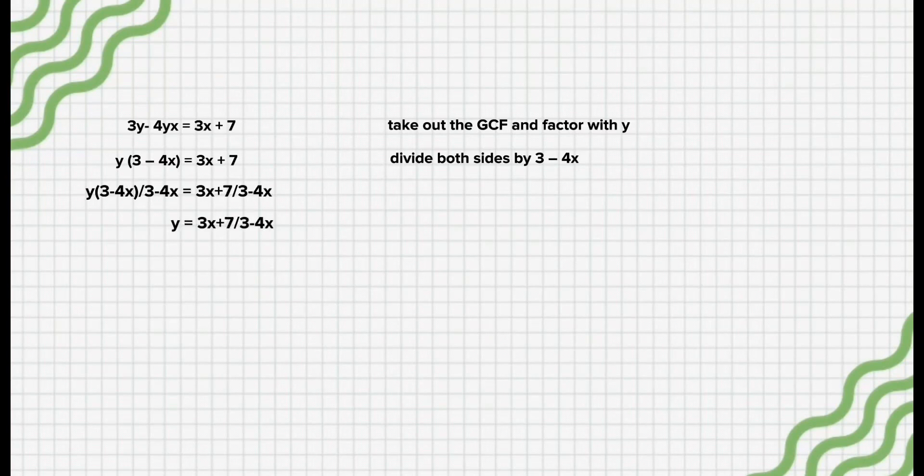y = (3x + 7)/(3 - 4x). And so, the inverse of the function is (3x + 7)/(3 - 4x).